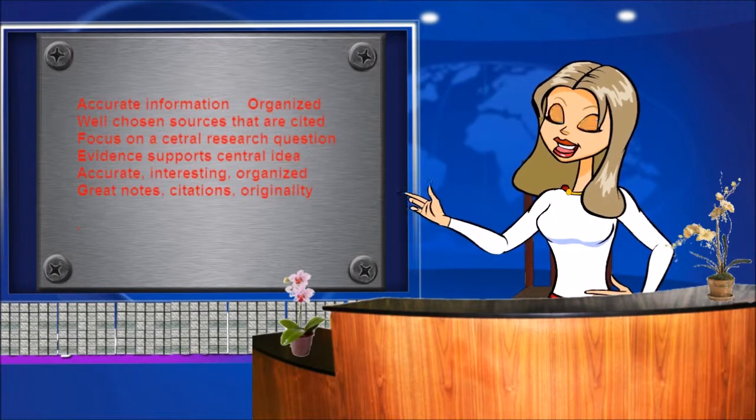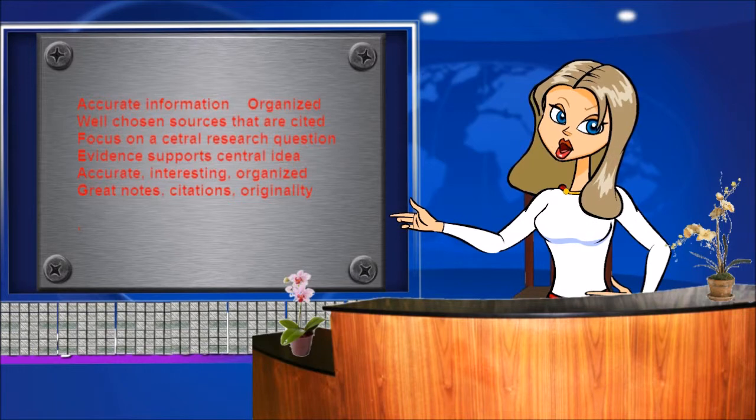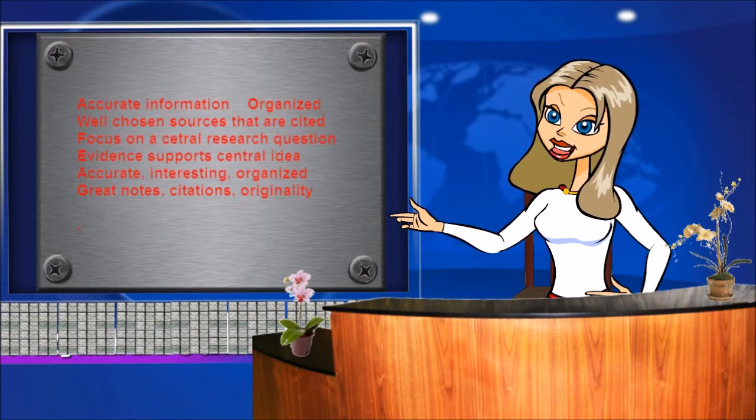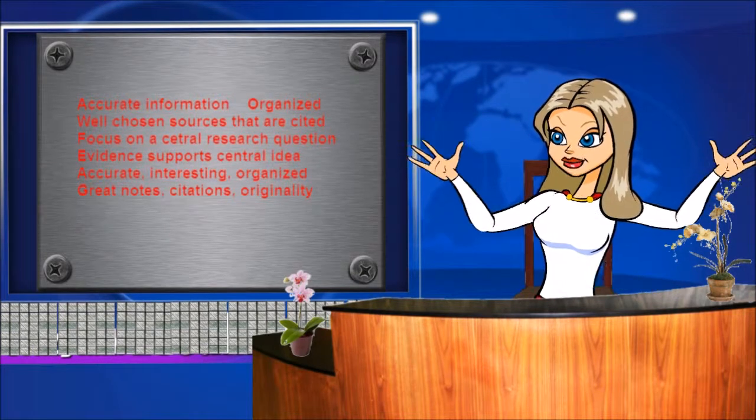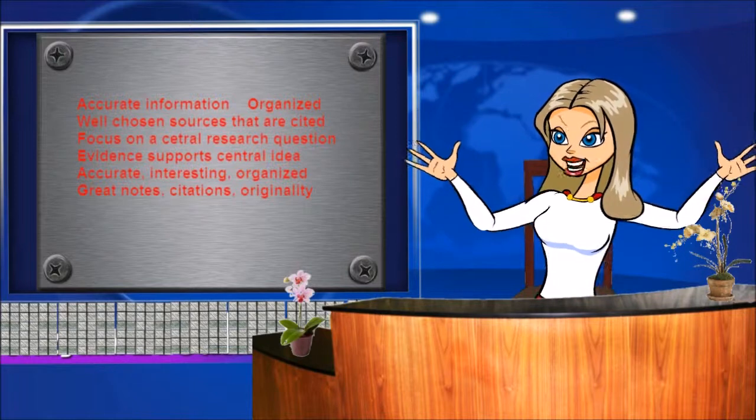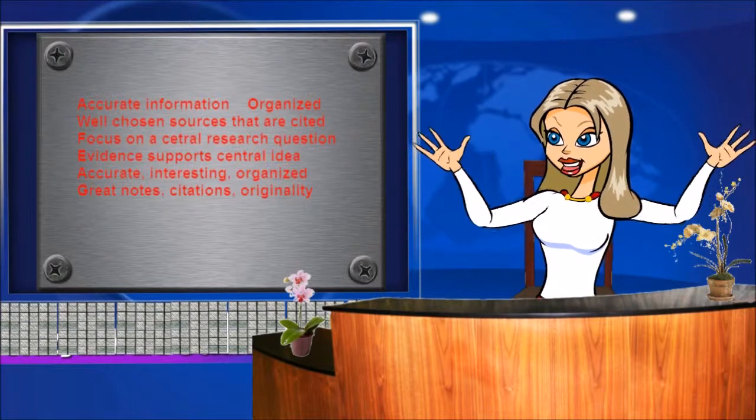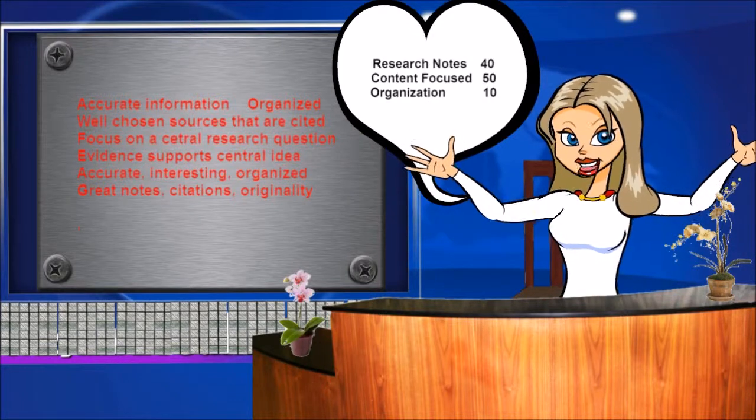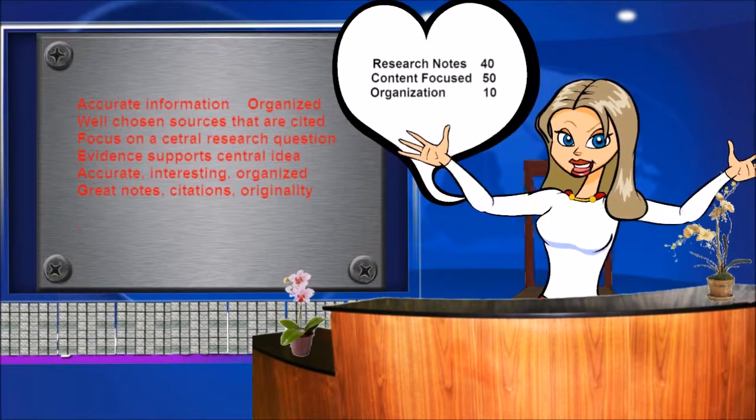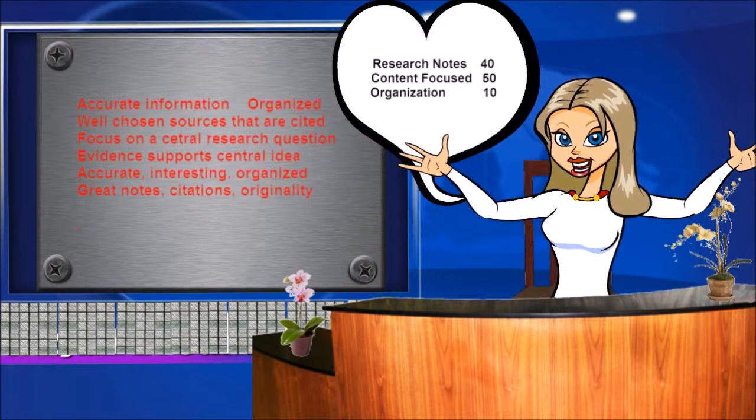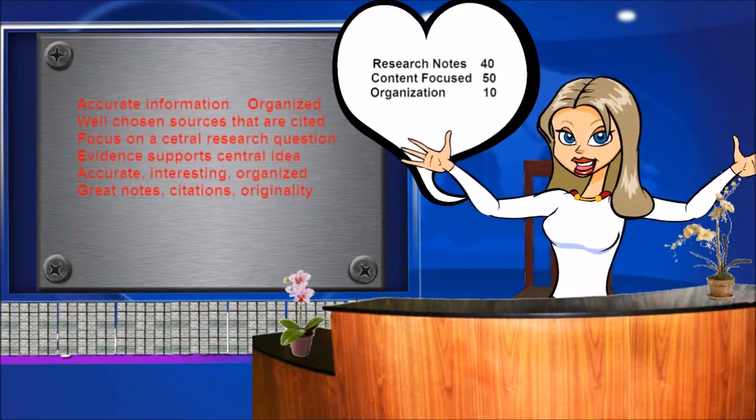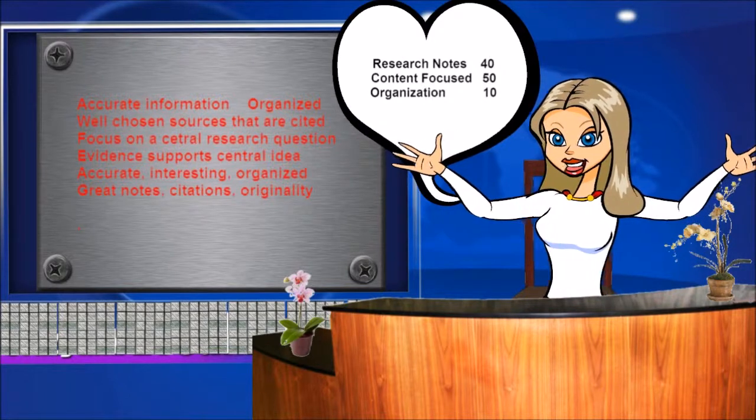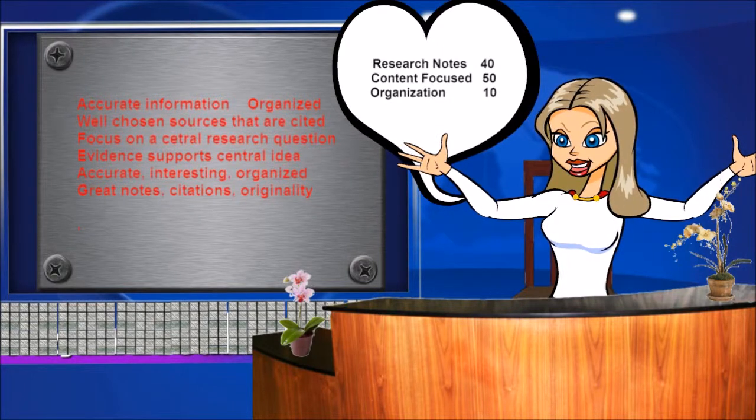Create your own research evaluation guide. Choose the elements you think are important. It has to add up to 100 points. Here's one idea you might have: 40 points for research notes, 60 points for content that's very focused on a main idea, and 10 points for organization. It's up to you.